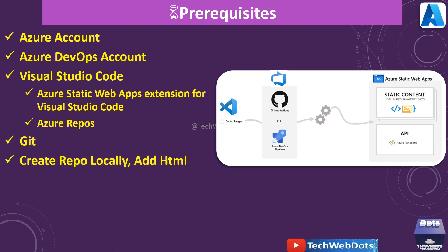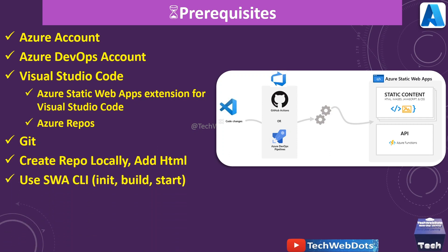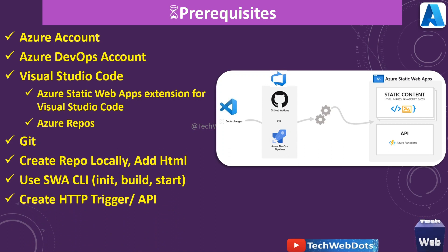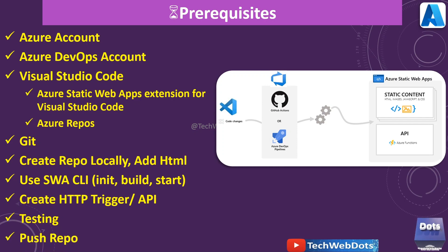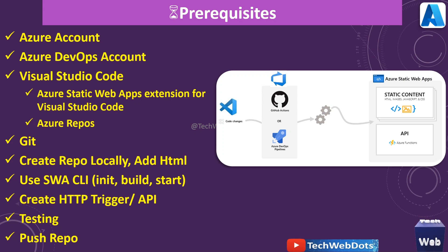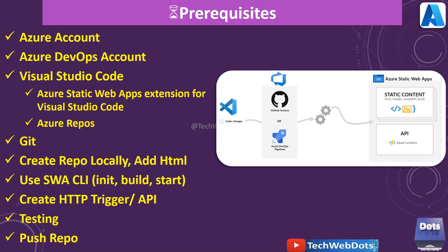Visual Studio Code should be installed with the following extensions: Azure Repos and the Azure Static Web App extension. We will create a repo locally, add HTML content, use the SWA CLI for initiating, building, and starting the app, create an HTTP trigger, test it, and finally push the repo to Azure DevOps. I strongly recommend watching the previous Azure DevOps video. Our blank repo was already created in that session.